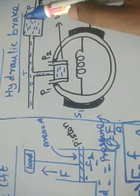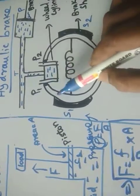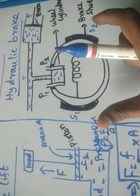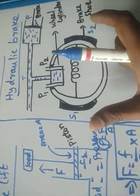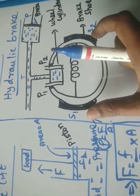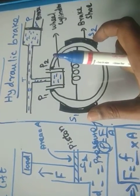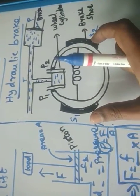Hence here the area is smaller, here the area is bigger. The pressure will be increased. By giving less force, the brake shoes will be attracted. It will be contacted more closely with the wheel. Due to the friction with the brake shoe and the wheel, the speed of the wheel will be decreased.